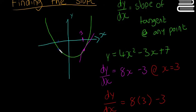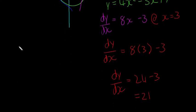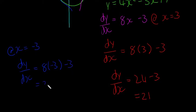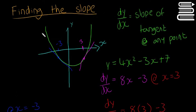Say for example if we want to calculate it at this point here, which is x equals minus 3. So at x equals minus 3, our dy/dx is equal to 8 times minus 3 minus 3, which is going to equal minus 24 minus 3, which is equal to minus 27. So obviously minus 27 is negative, so we can see that the slope is decreasing.